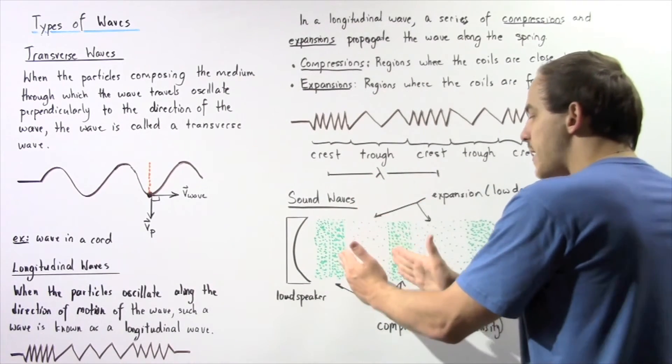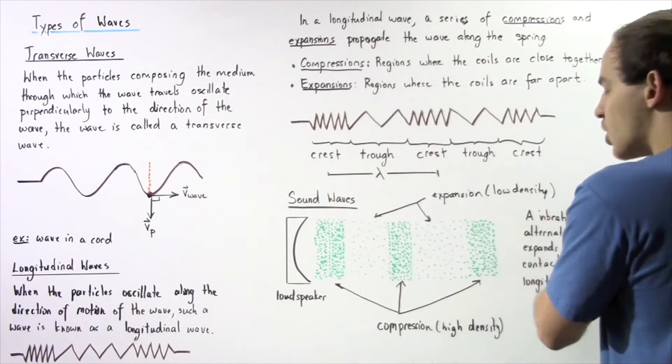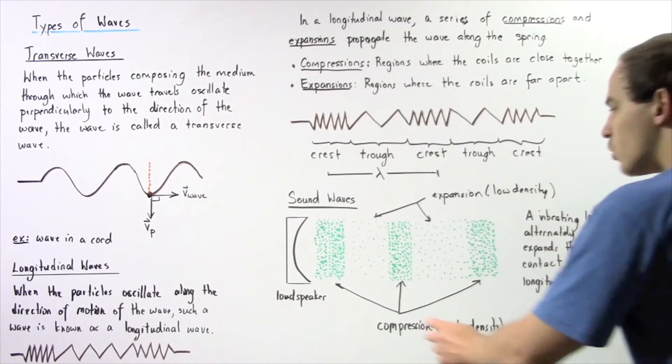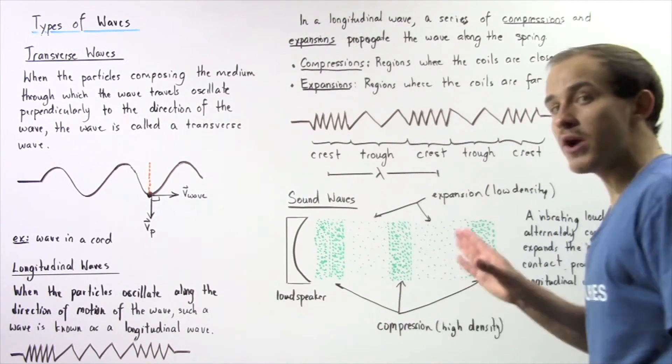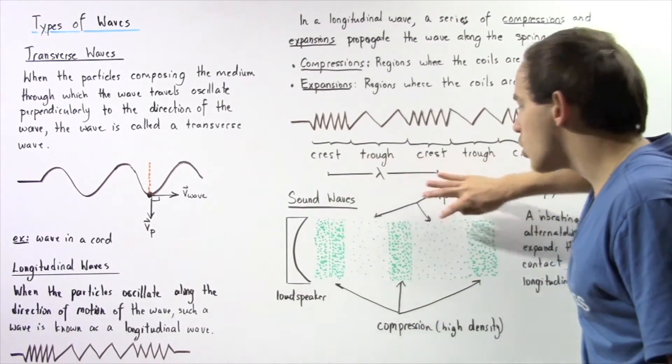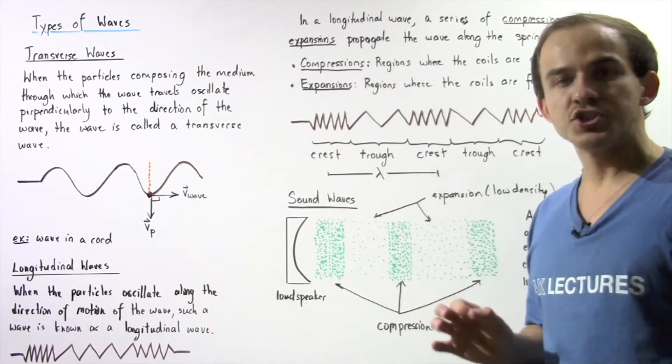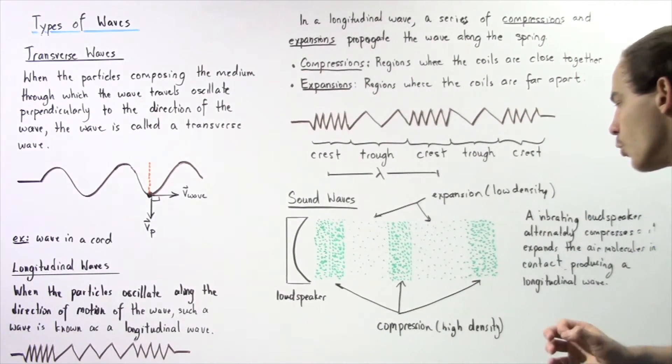The next region is expanded. This region is then compressed, expanded, compressed, and so on and so forth. So these regions are the compression regions where the density of air molecules is higher. And these are the expanded regions, the expansion regions in which the density of the air molecules is lower.